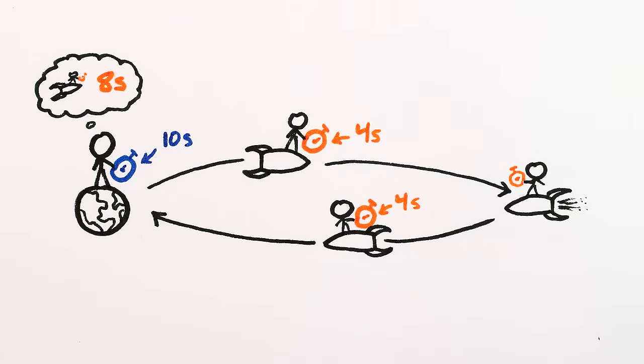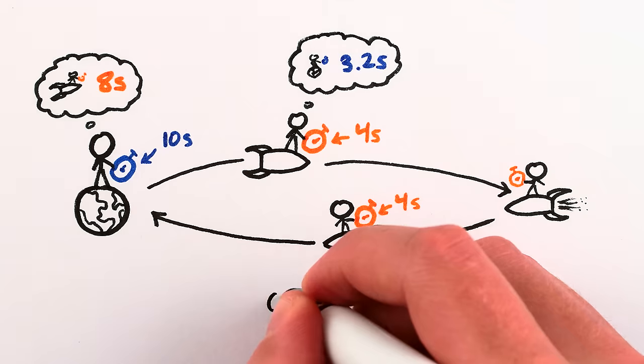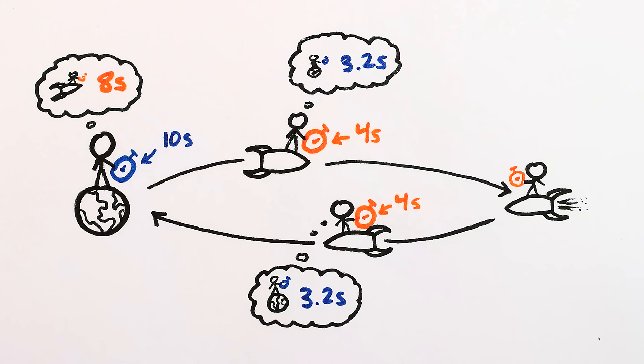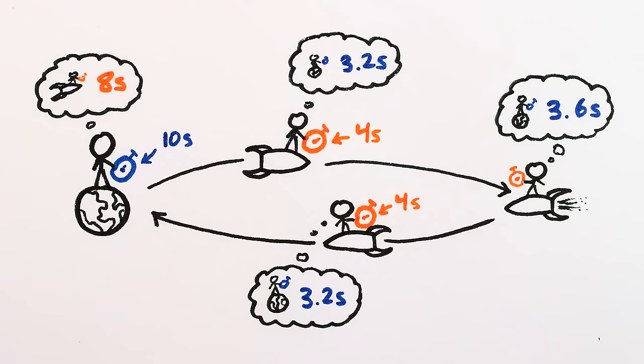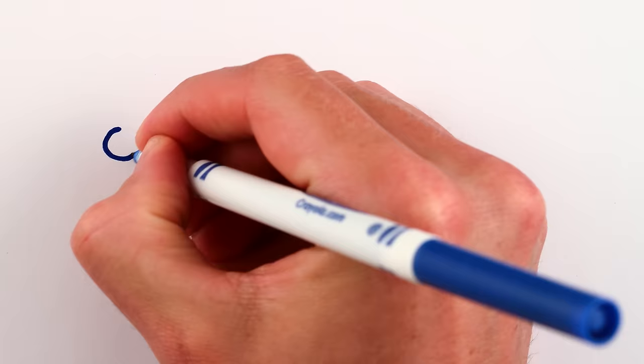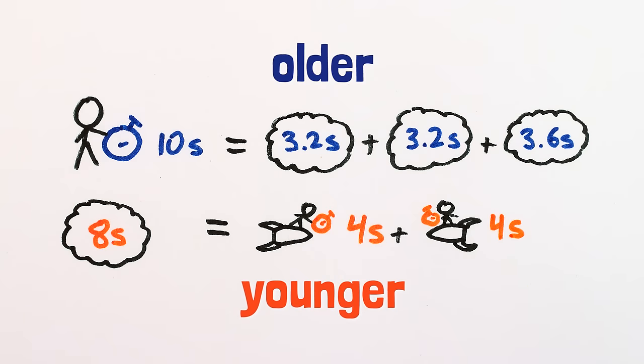8 seconds would pass for you, and you'd calculate 6.4 seconds as passing for me during your outward and return journeys, and 3.6 seconds as passing for me during your acceleration, even if it was basically instantaneous. So we both agree that when you come home, you'll be younger.